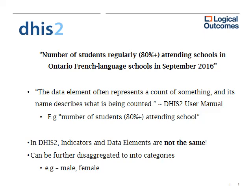One thing to note is that indicators and data elements in DHIS 2 are not the same things. Data elements are raw counts, raw numbers, raw data, while indicators are calculations. Data elements can also be further disaggregated into categories — we can break them up by gender (male, female, other), by age range (below or above 18 years old), and so on. The possibilities are limitless.